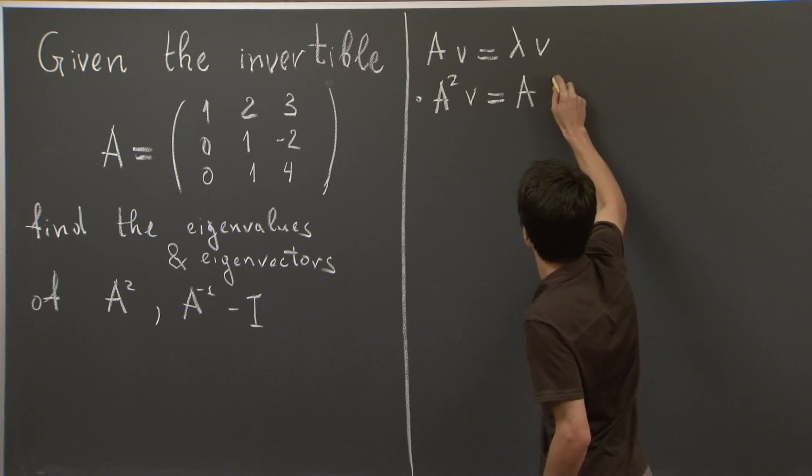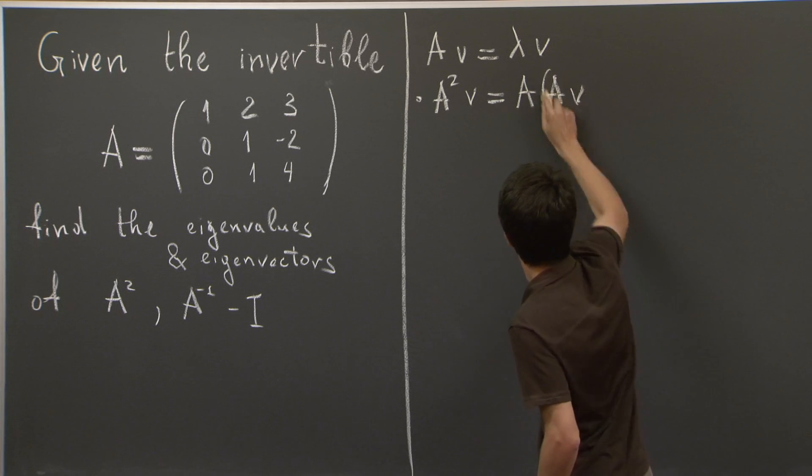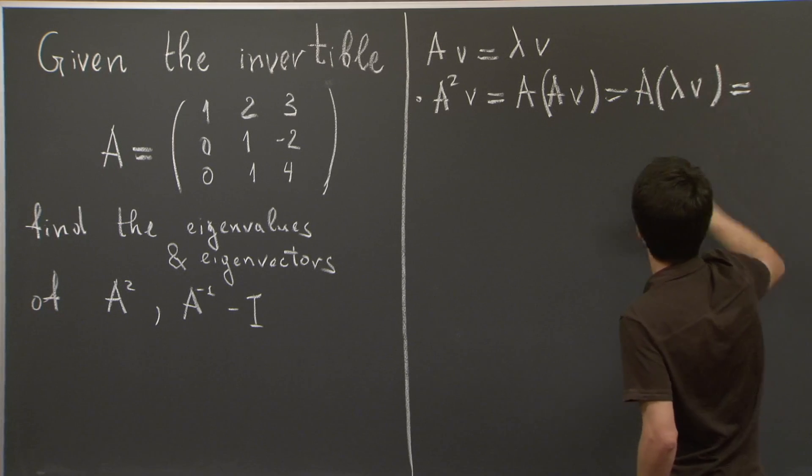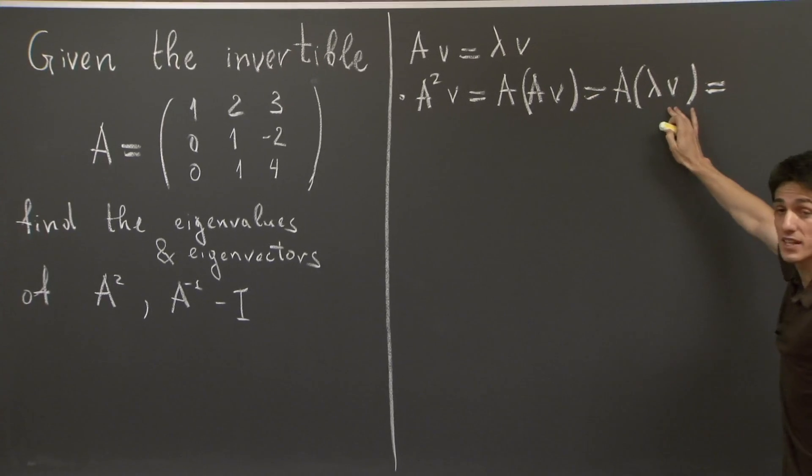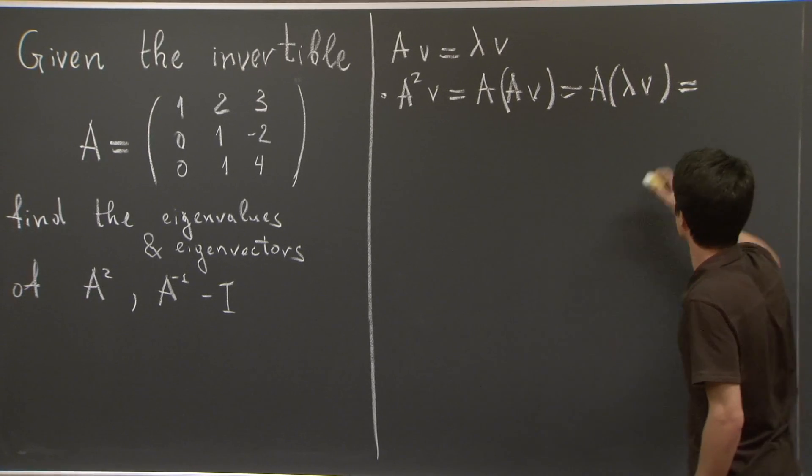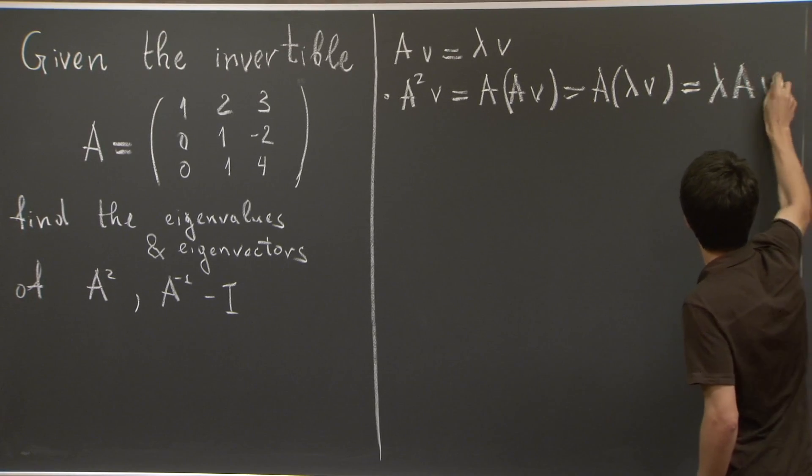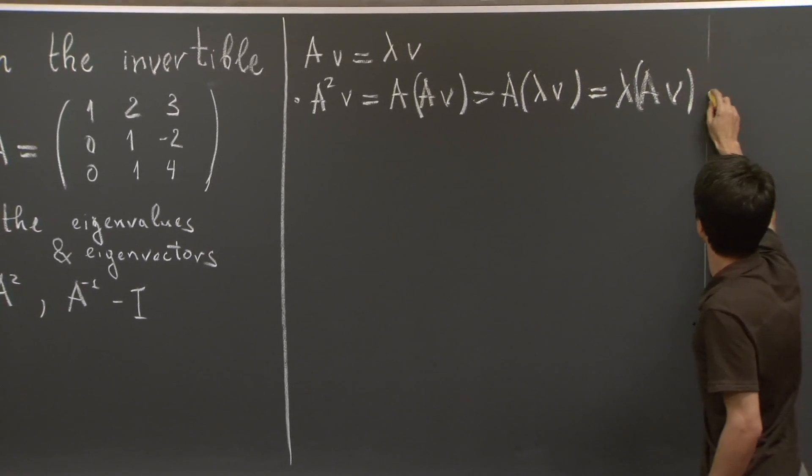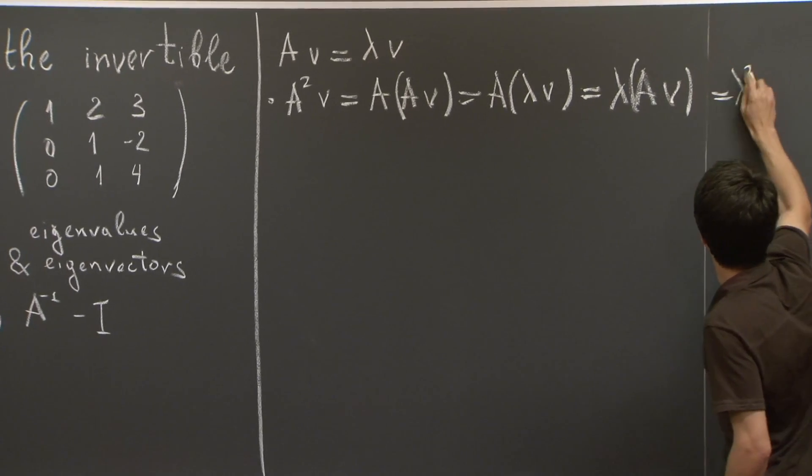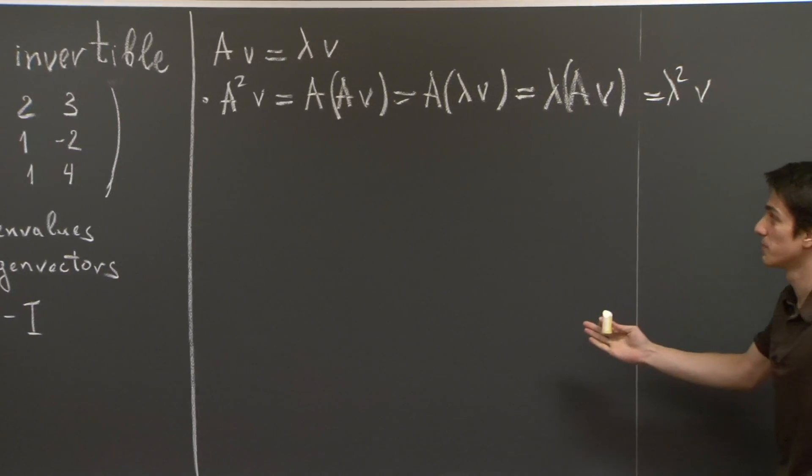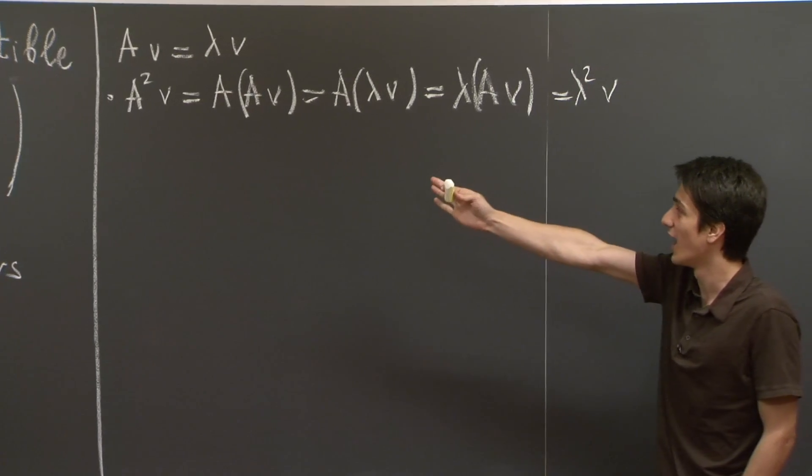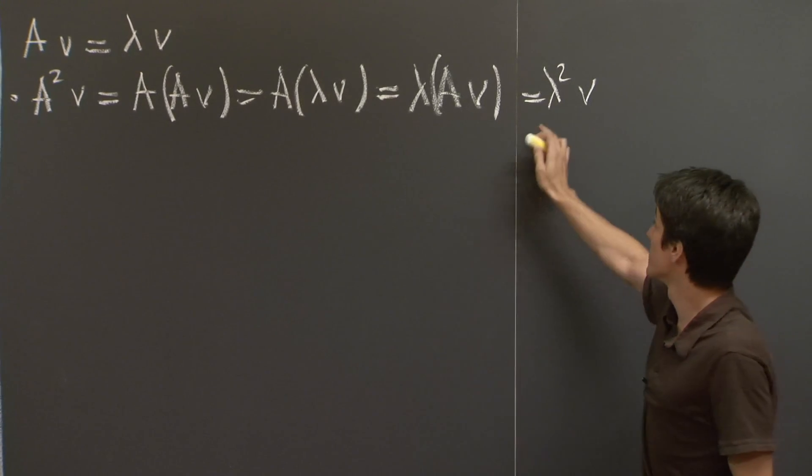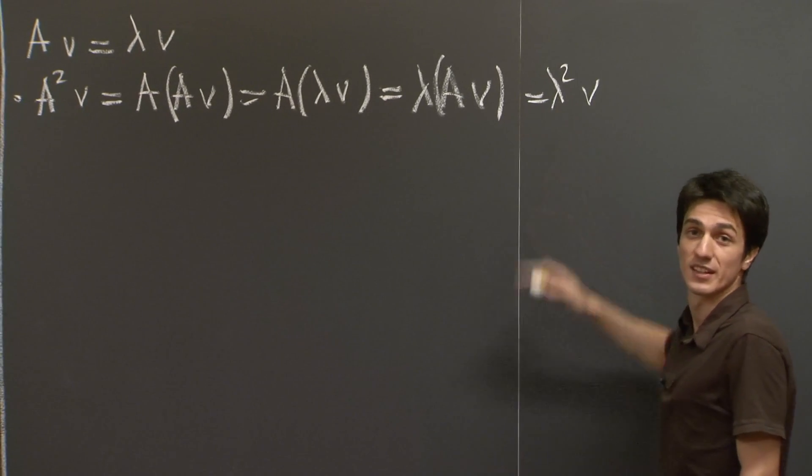well, we can write it as A times A V, but A V is lambda V, so we have A lambda V. Lambda is a scalar, so we can move it in front and get lambda A V. And lambda A V is, when we plug in A V, lambda V is just lambda squared V. So what we've found out is that if V is an eigenvector for A, then it's also an eigenvector for A squared. Just that the eigenvalue is the eigenvalue squared.